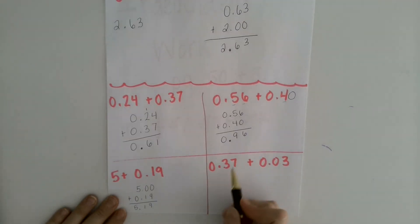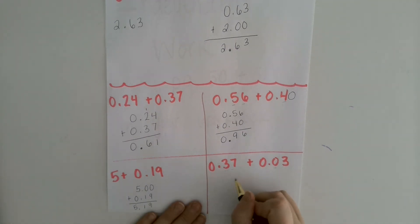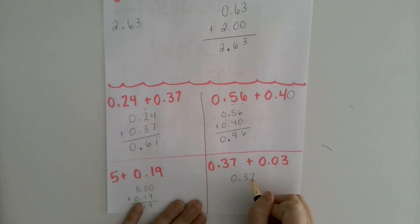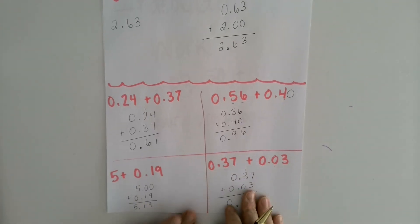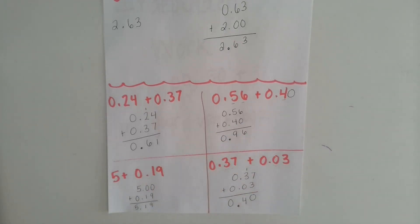And then over here, these both go two places past the decimal. So I don't need to add anything to them. Just need to line them up. 7 plus 3 is 10. So I'm going to put the zero down here and bring the one over. 1 plus 3 plus 0 is 4. 0 plus 0 is 0. Decimal point comes straight down. So you can check your work with those four problems.